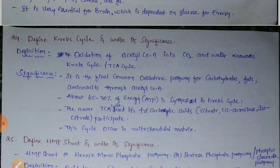Define Krebs cycle and write its significance. The Krebs cycle can be defined as the oxidation of acetyl coenzyme A into carbon dioxide and water. It is also known as the TCA cycle.